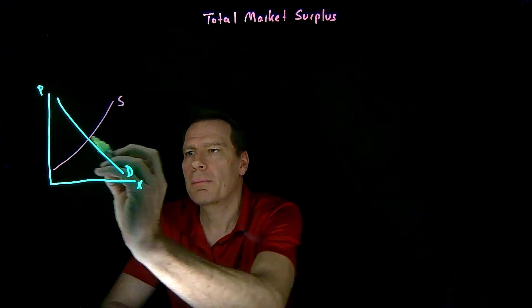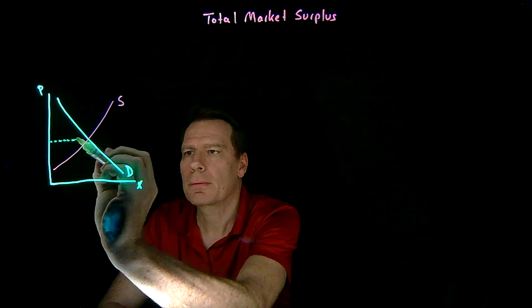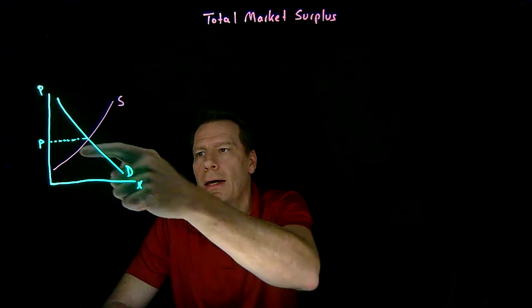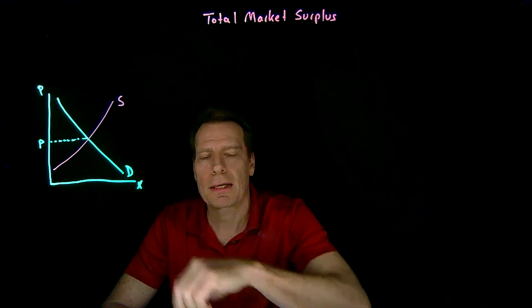Together, they form the equilibrium price and at that price, consumers get the surplus above that price up to the demand curve.